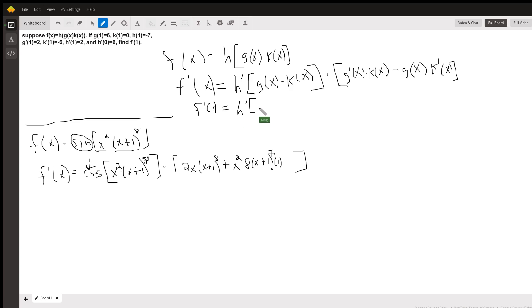So wherever we see an x, we're going to plug in a 1. So I've got g of 1 times k of 1, and hopefully we're given values for all of these.